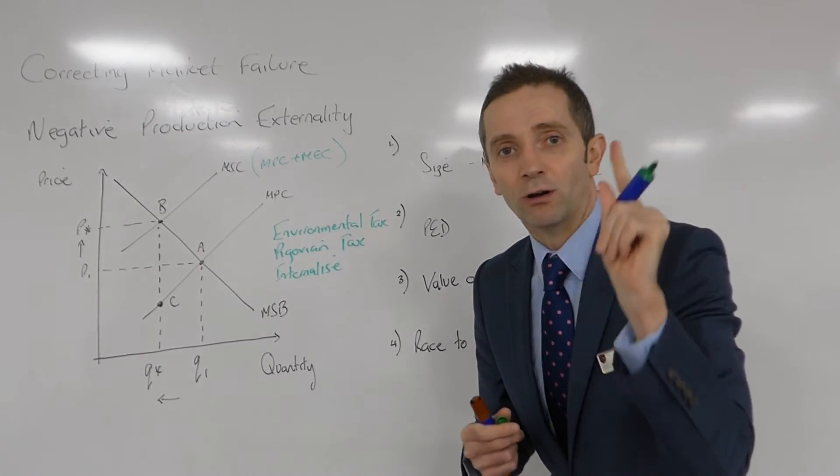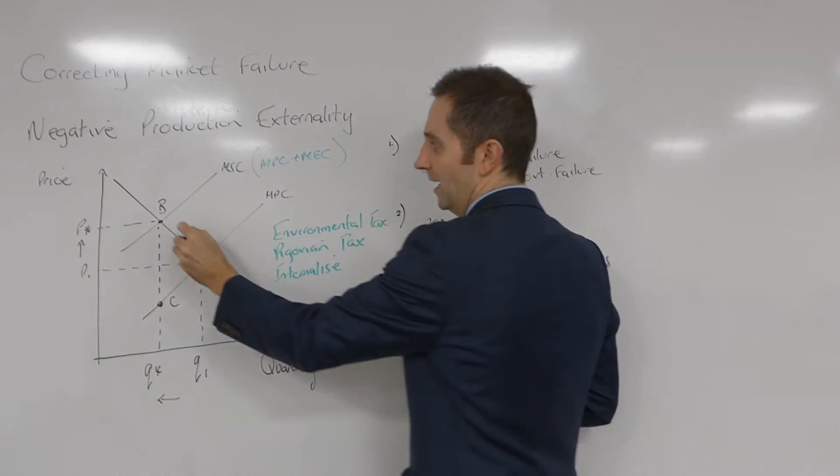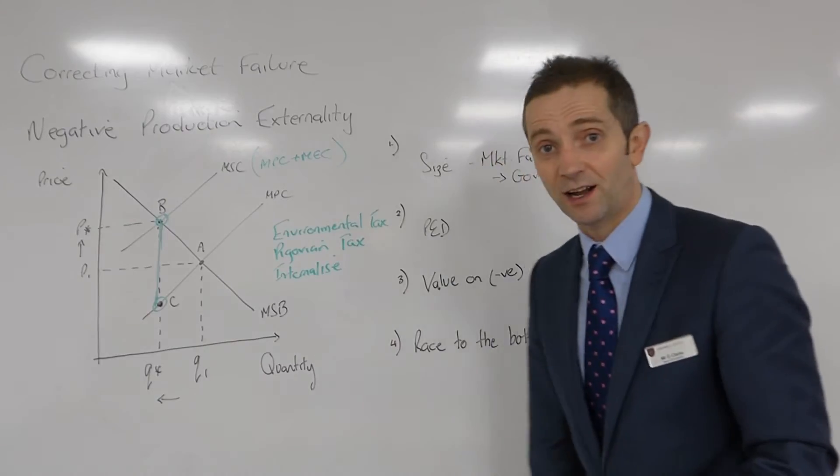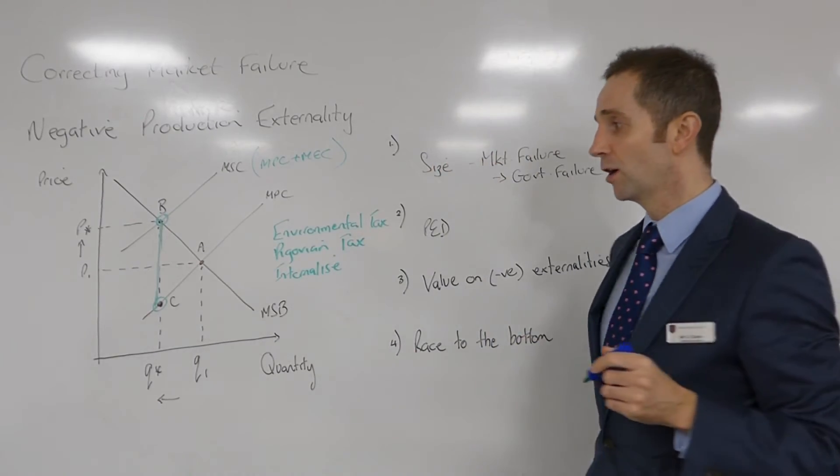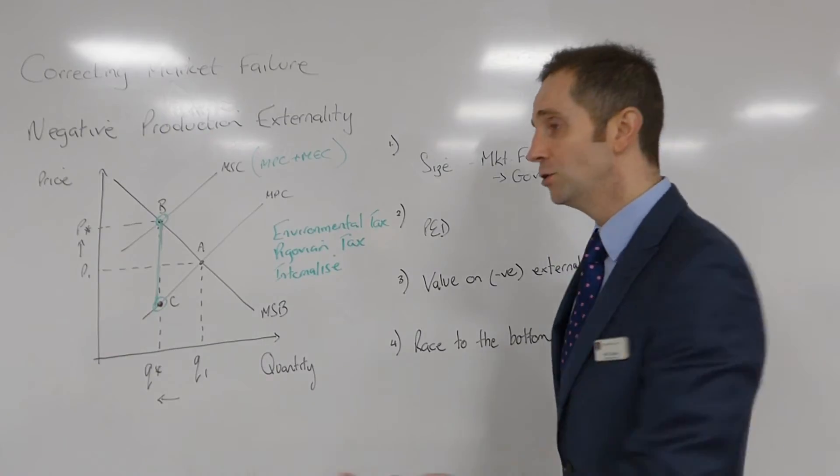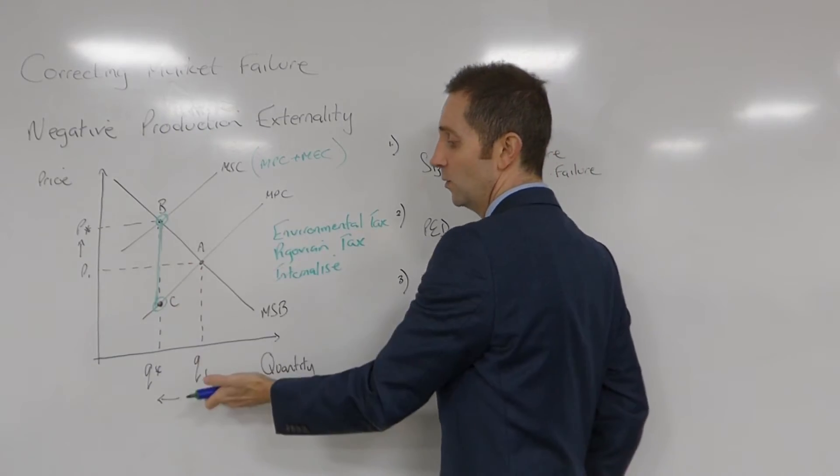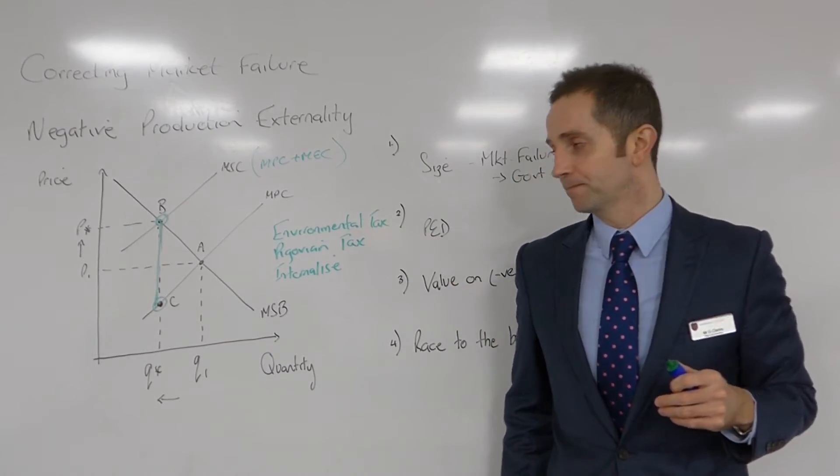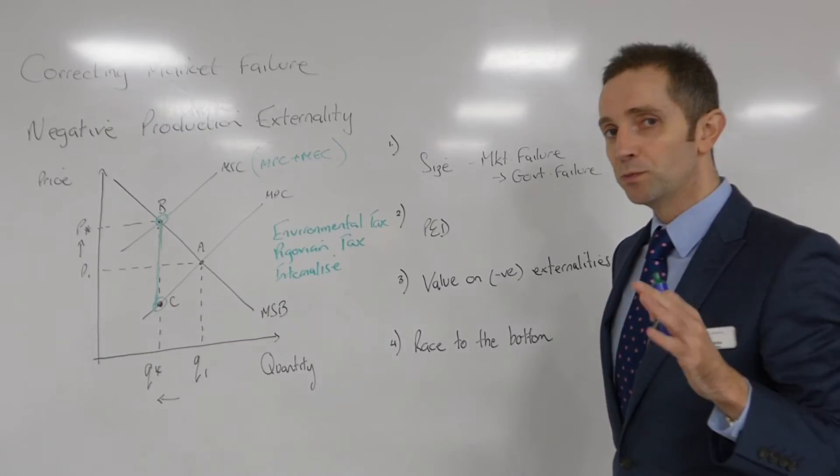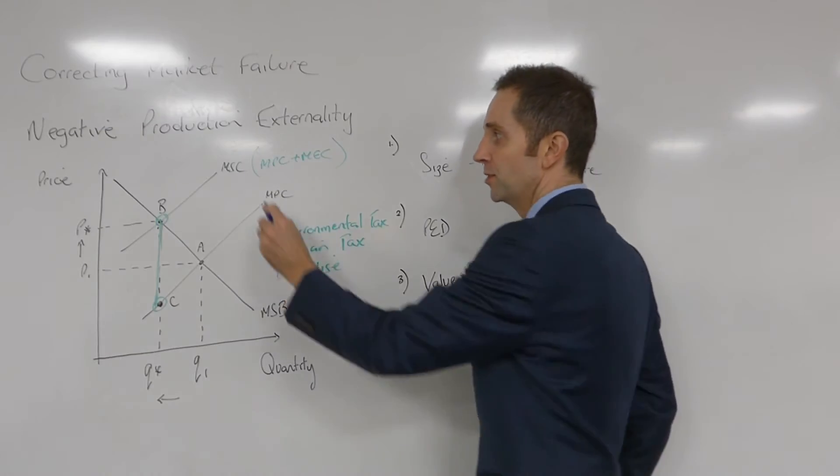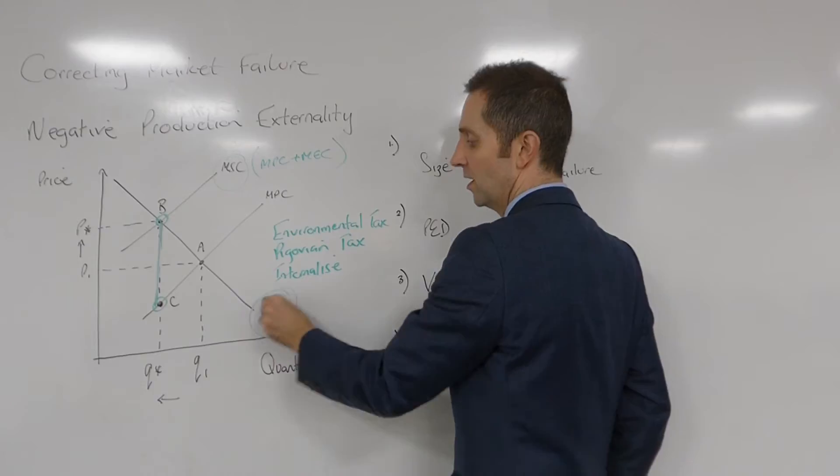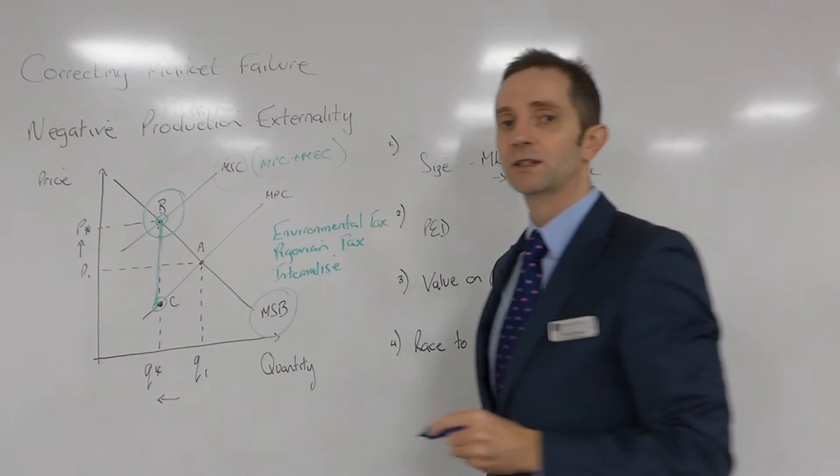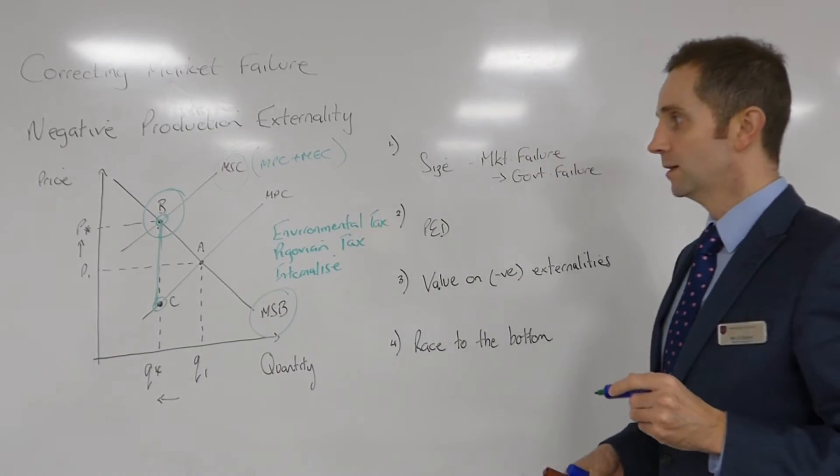So if you can charge firms a tax which is equivalent to the damage they're doing to society, as shown by the distance between the two curves, then theoretically you can raise firms' costs, which will then cause the firm to reduce its output. And of course, the price will rise. That would bring us to a socially optimum position where the marginal social costs are equivalent to the marginal social benefits at point B.